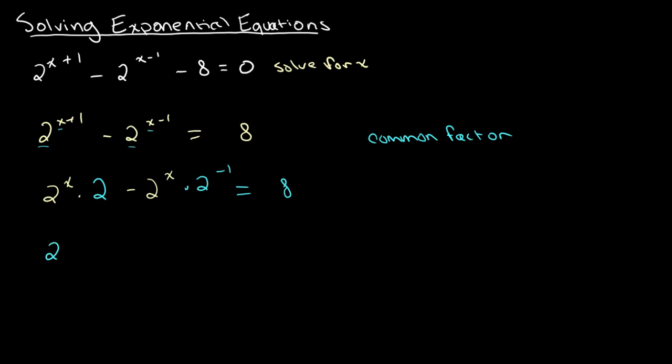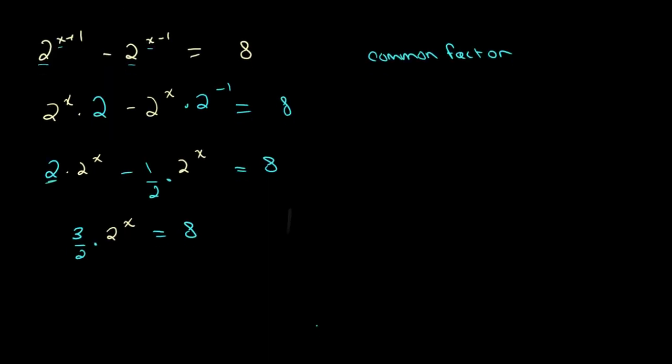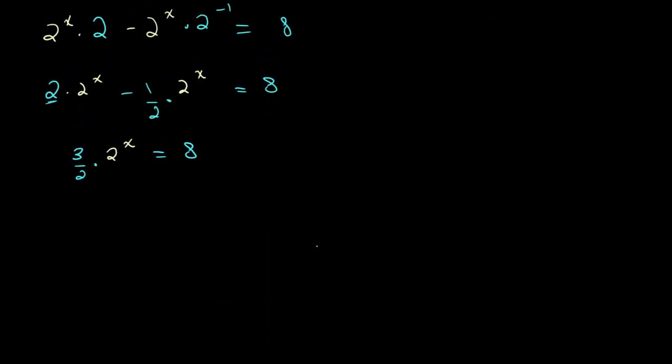So from this we get 2 times 3 over 2 times 2 to the power of x is equal to 8. This gives us 3 over 2 times 2 to the power of x is equal to 8. We can move everything around now. So we get 8 times 2 over 3 is equal to 2 to the power of x. And this is equal to 16 over 3.